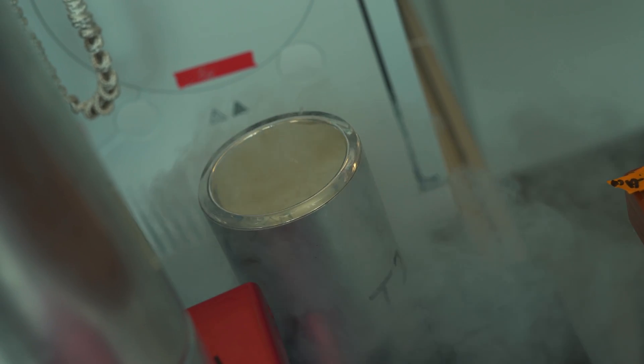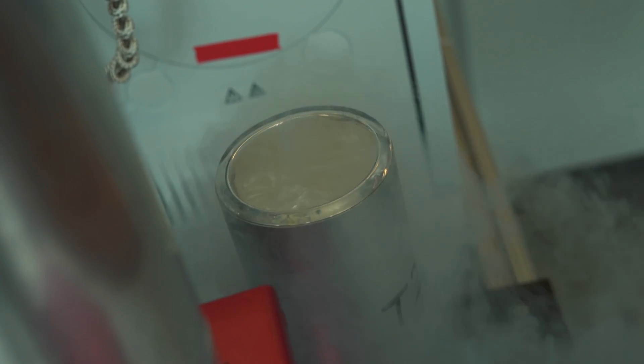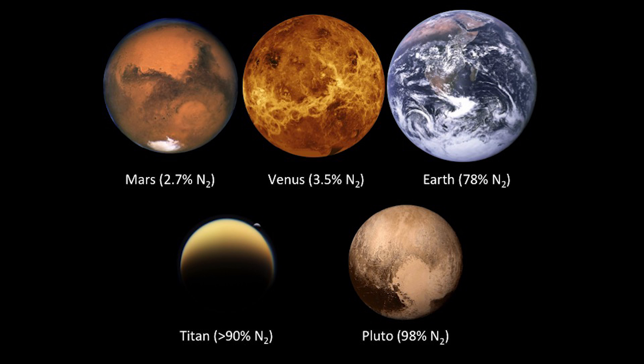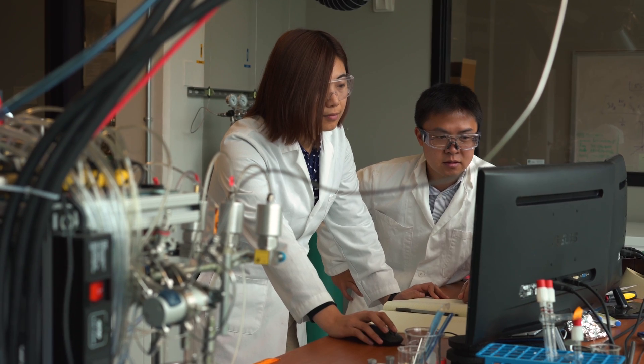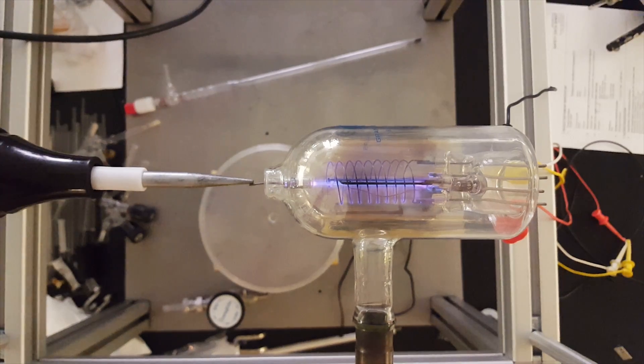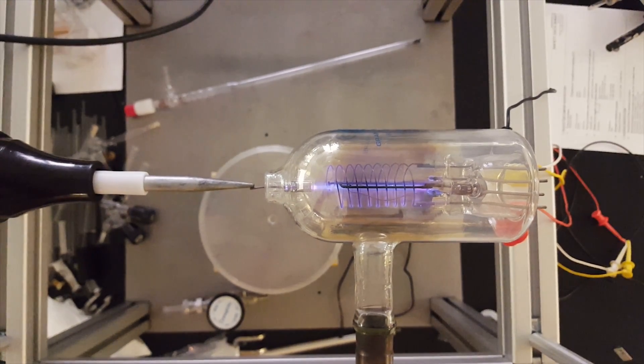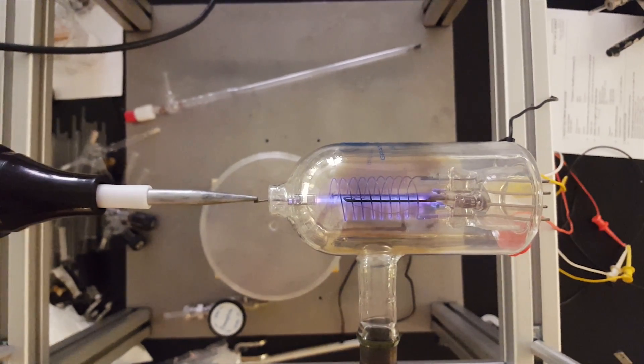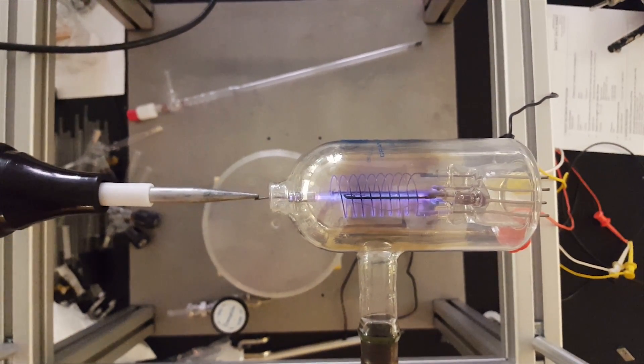Nitrogen is three-quarters of our atmosphere. So if you go to any other planet — you go to Mars, you go to Venus — you're going to find some nitrogen. The question is, what is making that nitrogen? Was it life? Is it just coming from the Earth? What exactly is happening? That needle that we're looking for is hidden within this invisible haystack of nitrogen molecules in these planetary atmospheres.